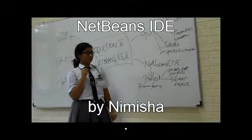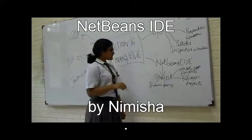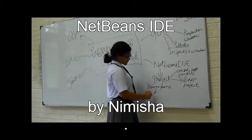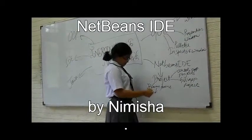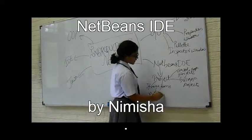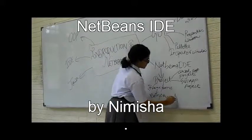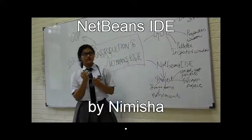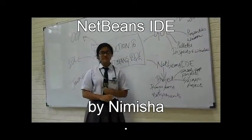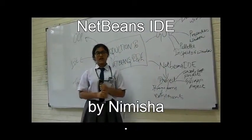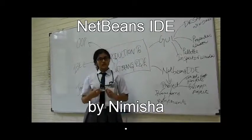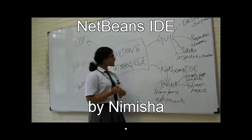Components are put in JFC forms. Components are the basic interaction objects used by the user via mouse or keyboard. They are also known as controls and are GUI objects.